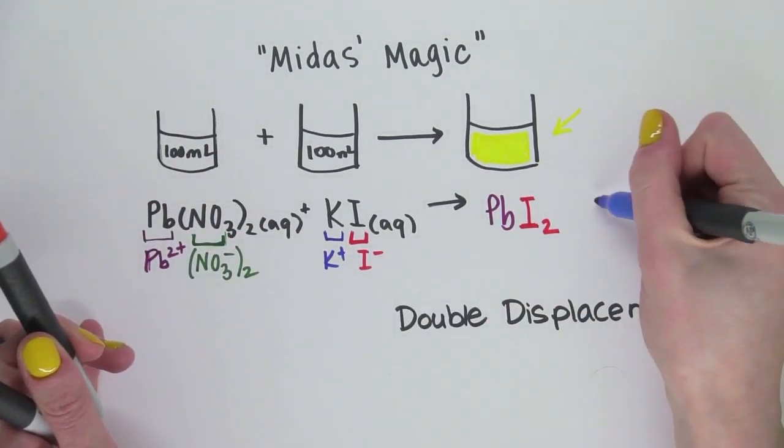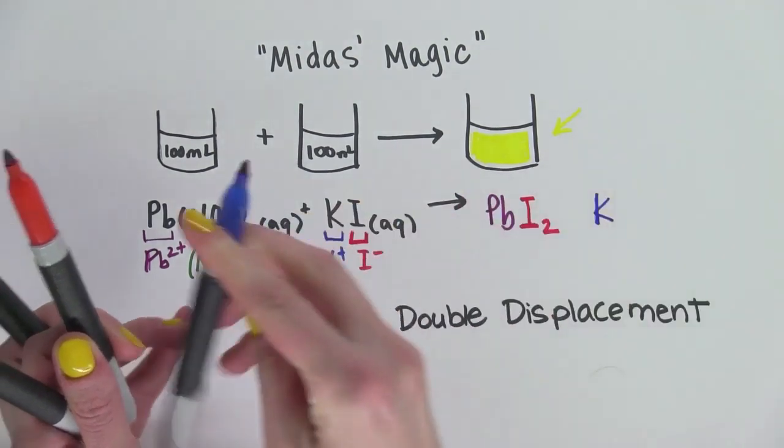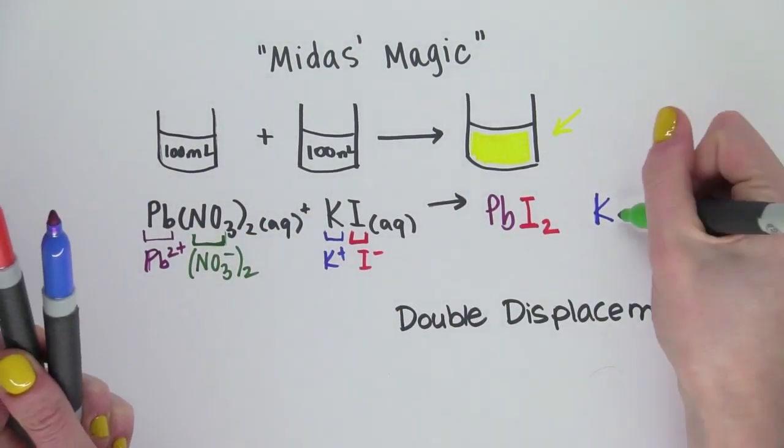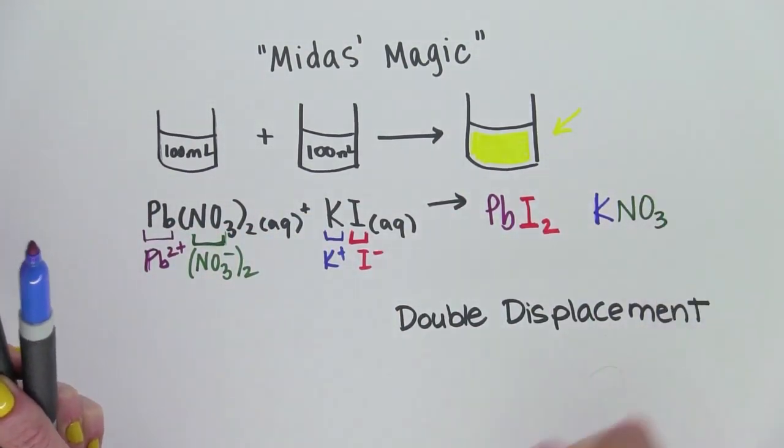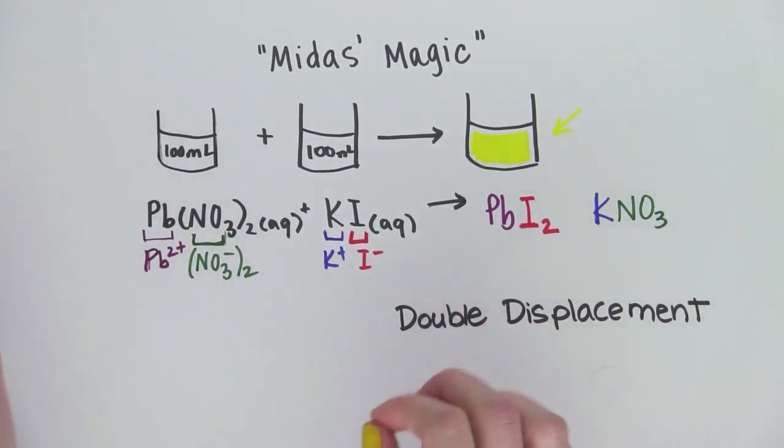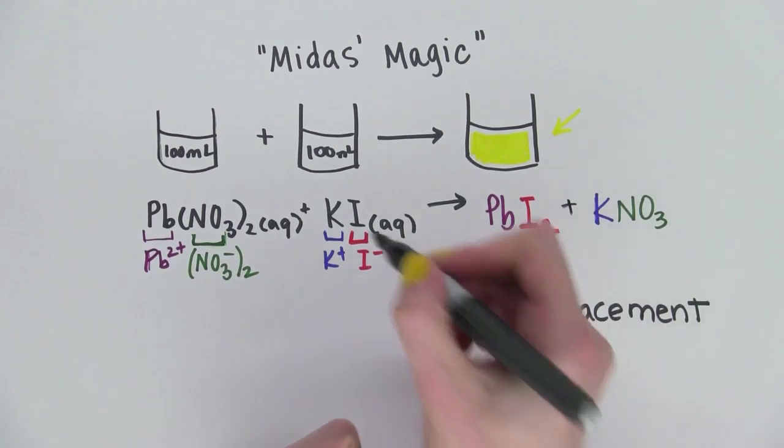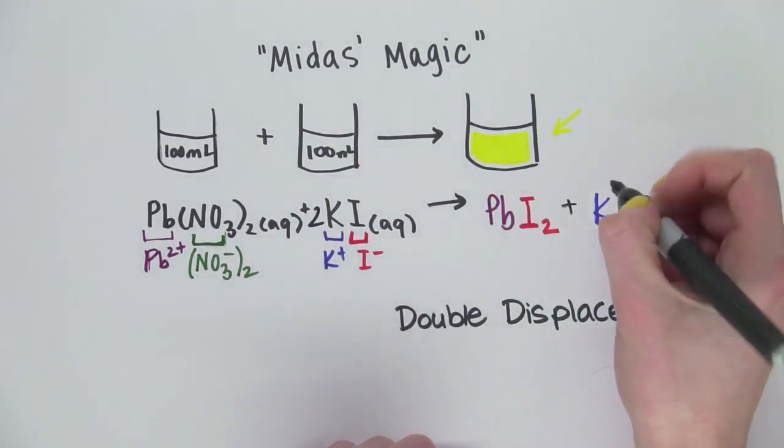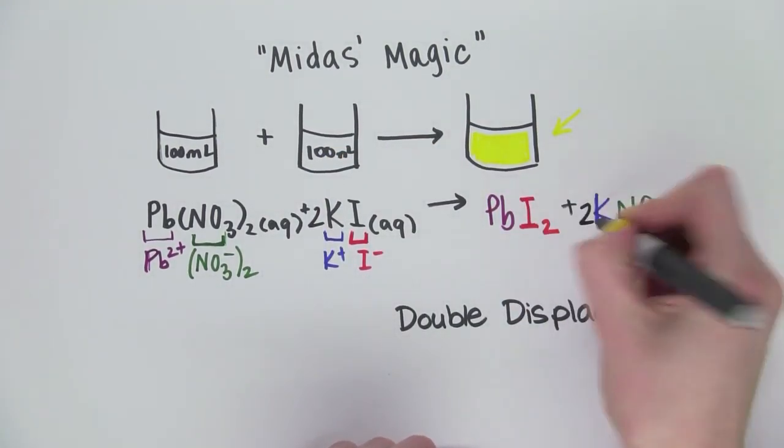And potassium nitrate. And we just need one nitrate here. So our cations and anions all switched places. We're going to need to balance this equation. Let's throw some twos there and there.